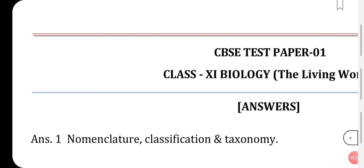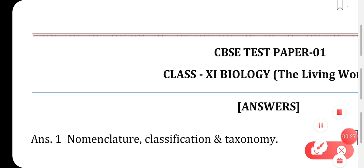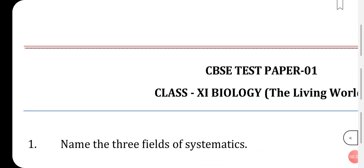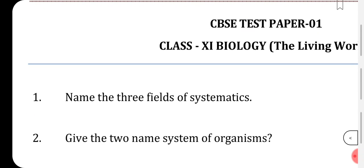The answer: the first one is nomenclature, the second is classification, and the third is taxonomy. So these three are the main fields of systematics. Now coming to the next question: give the two-name system of organisms.